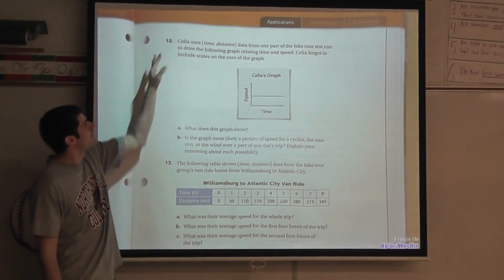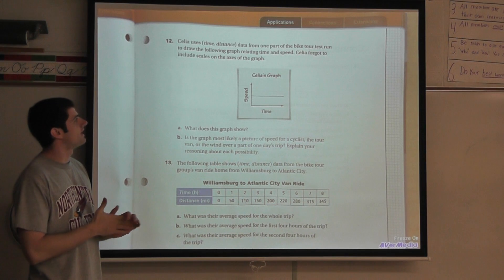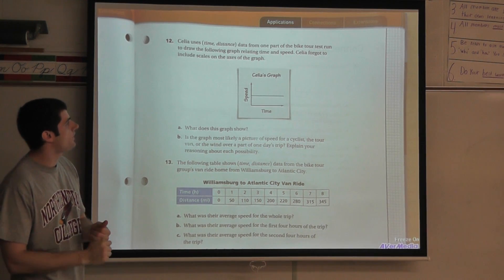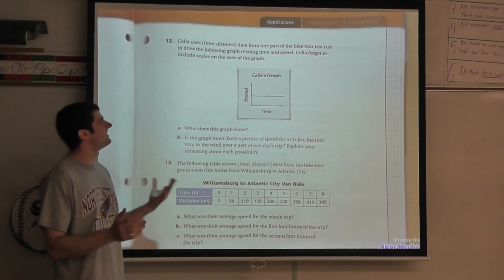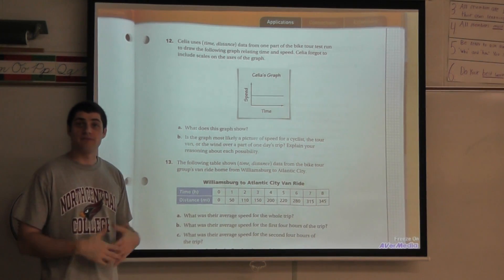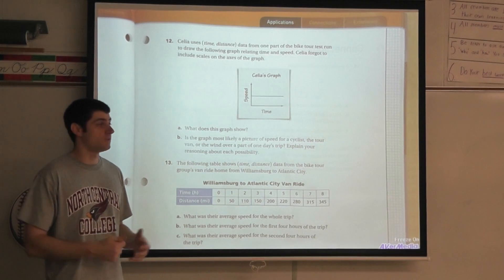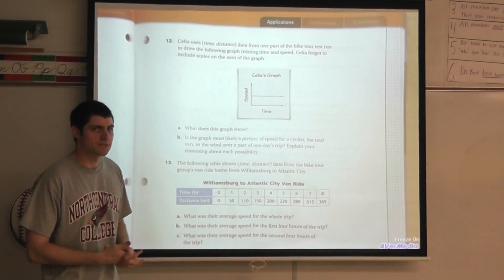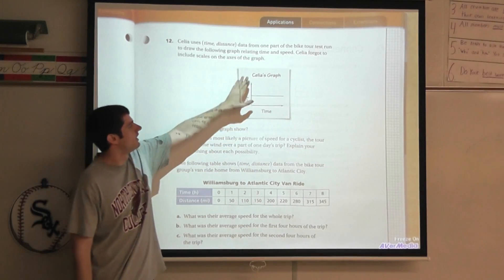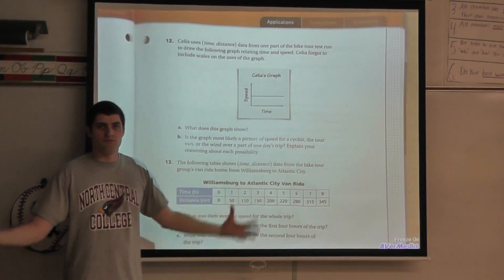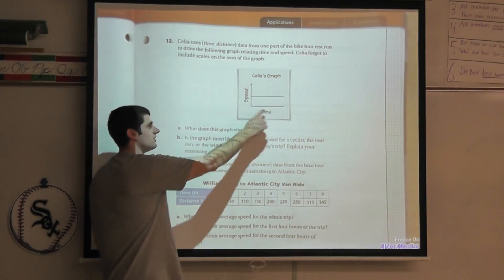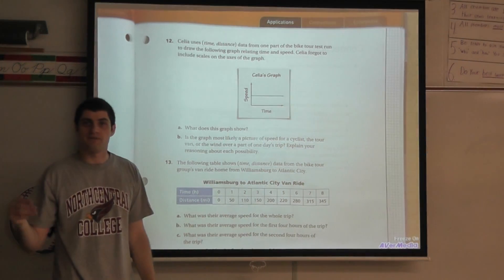Let's take a look at 12. It says Cecilia uses time and distance data from one part of the bike test run to draw the following graph relating time and speed. Cecilia forgot to include scales on the axis of the graph. Here's her graph, she's got time here on the x-axis, she's got speed on the y-axis, but there's no scale, basically no numbers, no intervals like 5, 10, 15, 20.